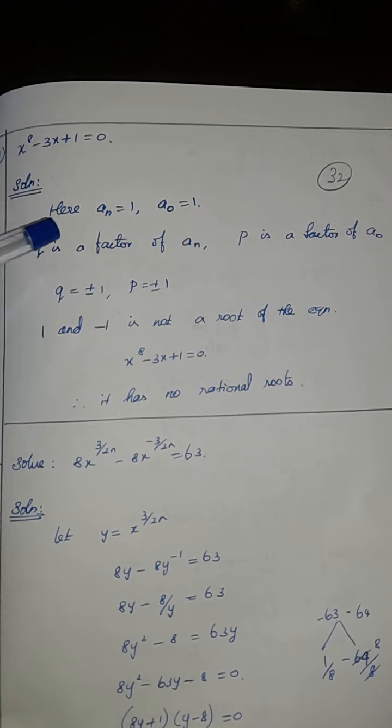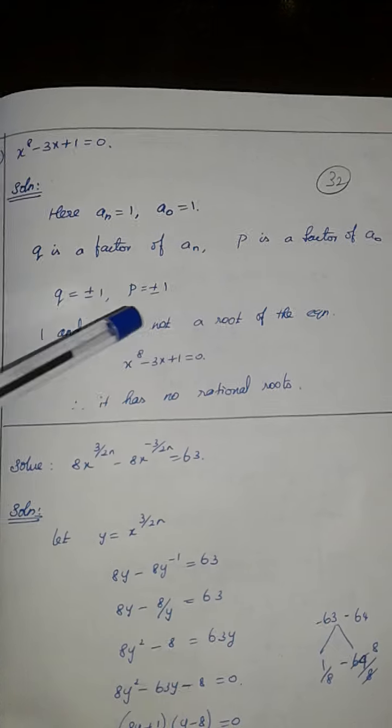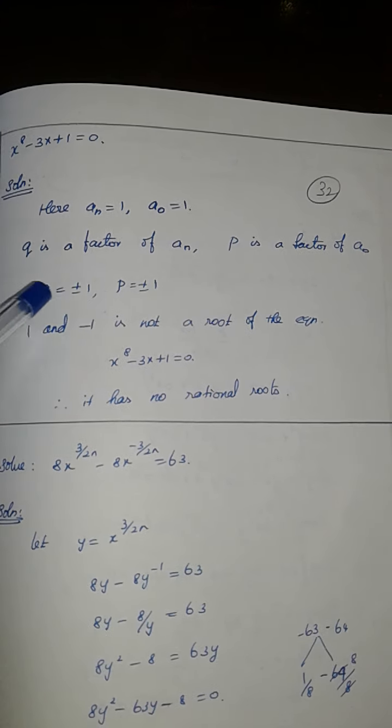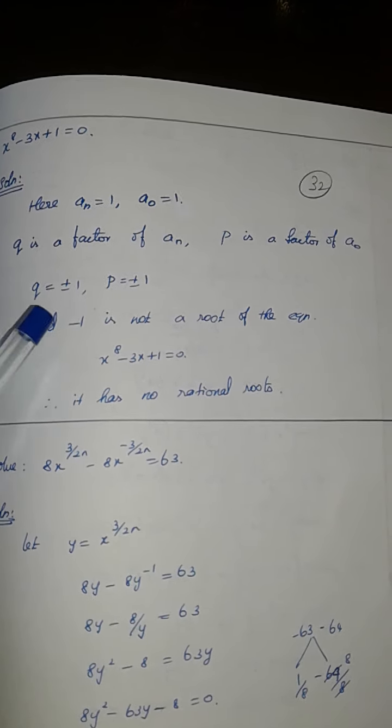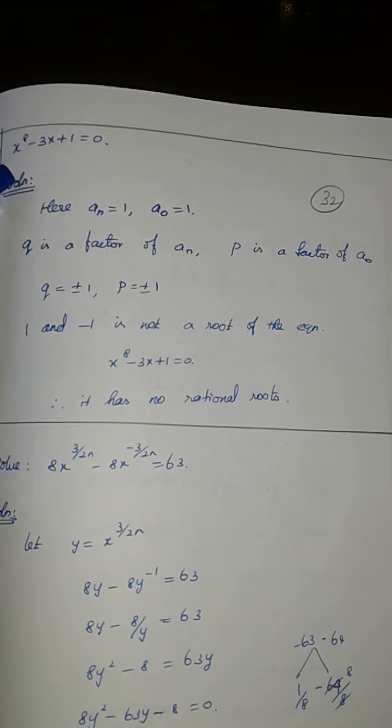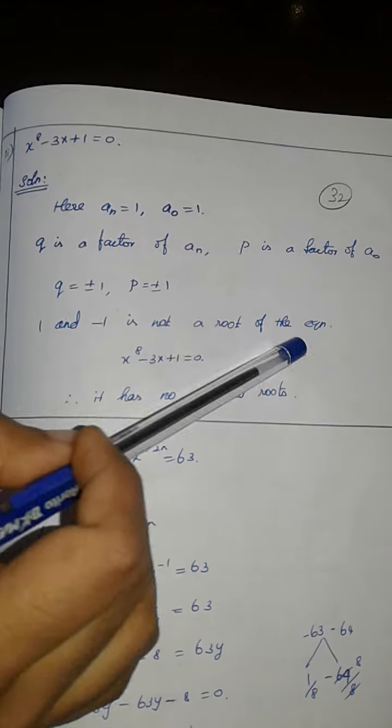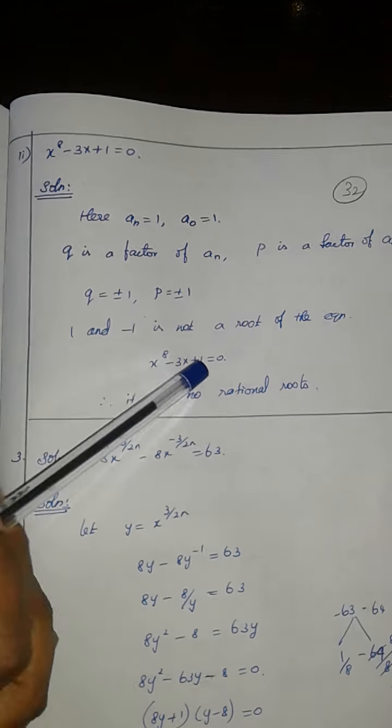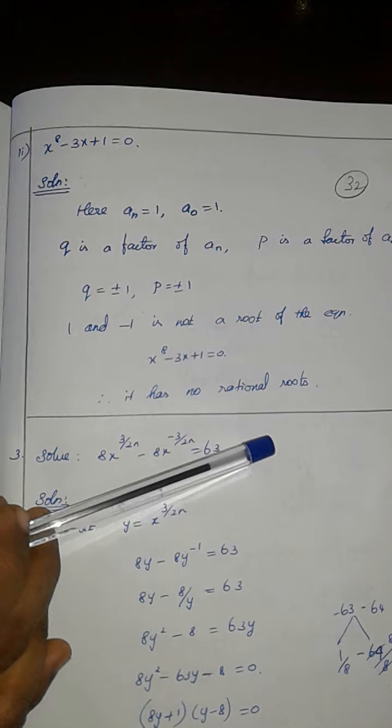The higher power factor is plus or minus 1 and the lower power factor is plus or minus 1. If we have p by q, we have to use plus or minus 1. The plus or minus 1 is the rational route. So the rational route is the rational route.